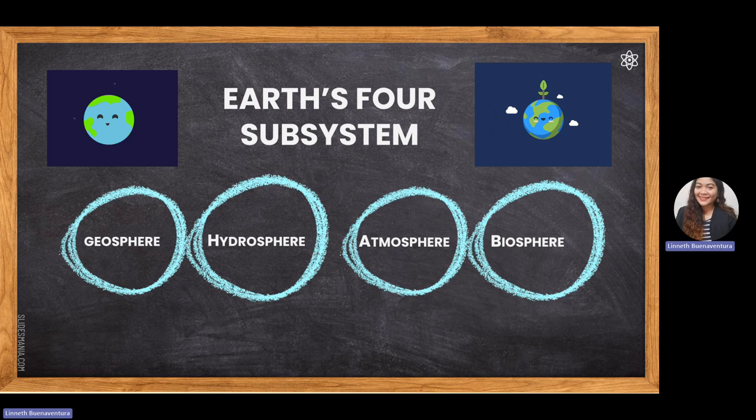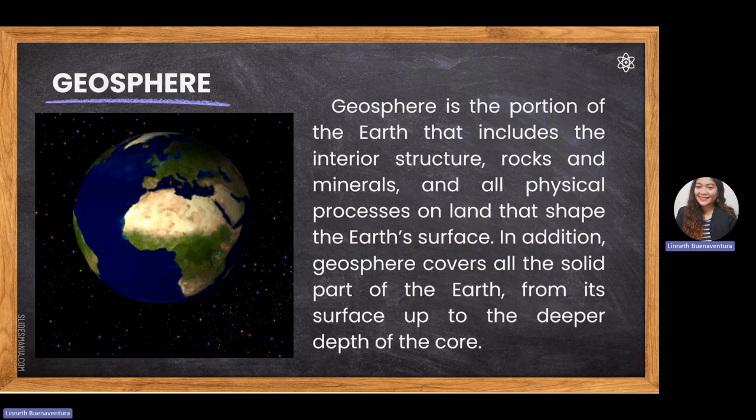The interaction of the dynamic parts of our planet make up the subsystems. We have four subsystems: geosphere, hydrosphere, atmosphere, and biosphere. Let's discuss the first subsystem, the geosphere. Geosphere came from two Greek words: 'geo' meaning ground, and 'sphere' pertaining to the shape of the earth. Geosphere includes all soil, rocks, and minerals from the crust down to the core.